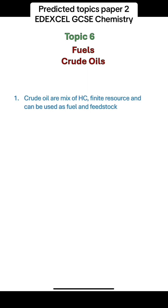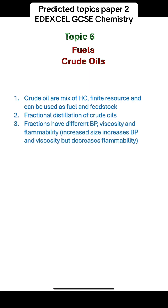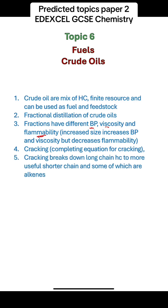Topic 6 is fuel and crude oil. Remember that crude oil is a mixture of hydrocarbons. It is a finite resource and can be used as fuel and as feedstock. Remember the separation of different fractions of crude oil using fractional distillation, and that different fractions have different boiling points, viscosity, and flammability. Increasing the size of the hydrocarbons increases boiling points and viscosity and decreases flammability. Cracking is the breaking down of long-chain hydrocarbons to form shorter-chain hydrocarbons, some of which are alkanes and others are alkenes.